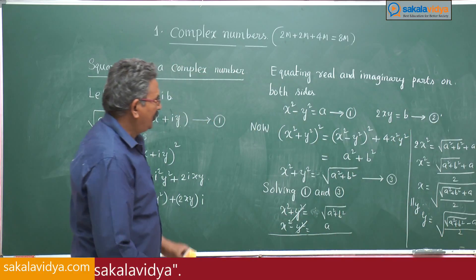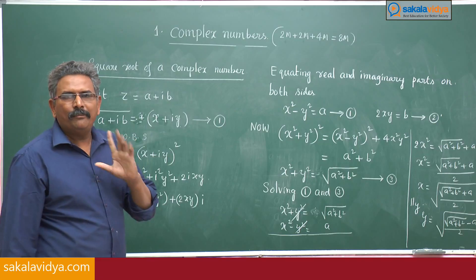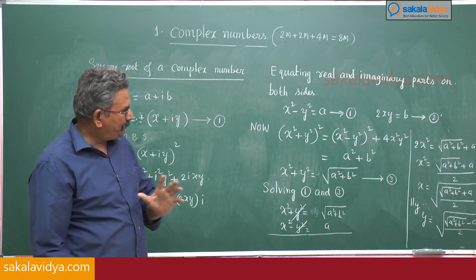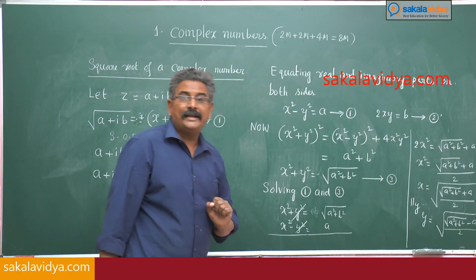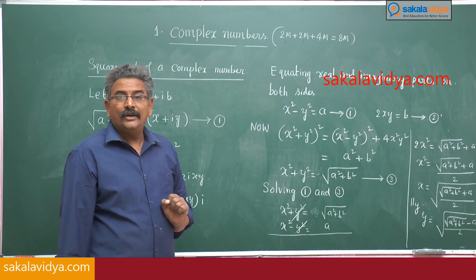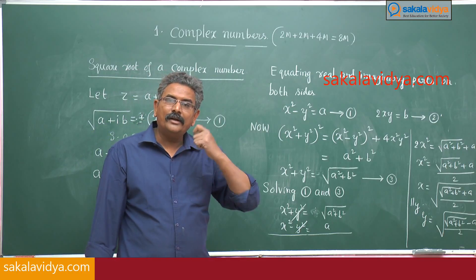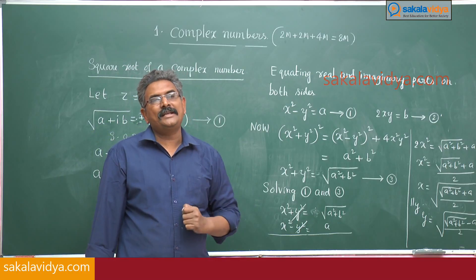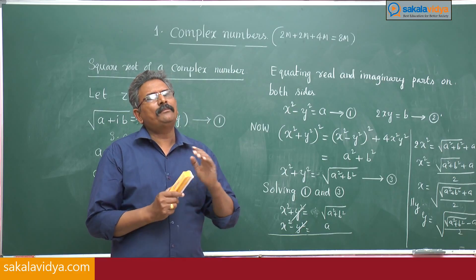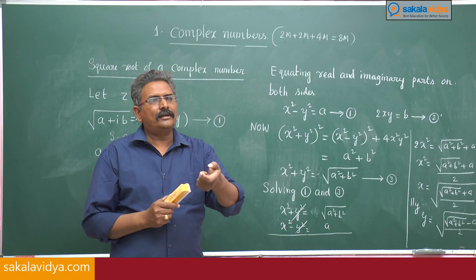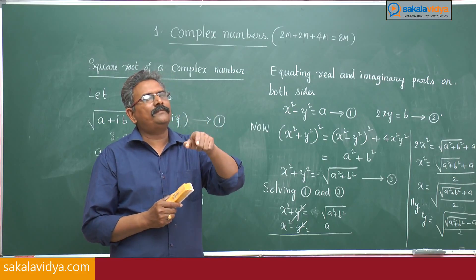Now, it is very hard to remember. Better, note that root of a² plus b² is nothing but the modulus of a plus ib. So better remember it as r, where r equals mod of z.